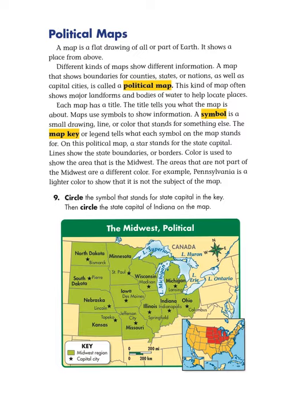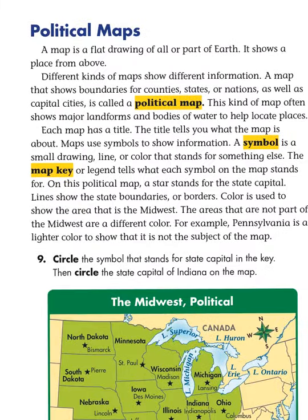Let me read this first section of text for you. It says, a map is a flat drawing of all or part of Earth. It shows a place from above. Different kinds of maps show different information. That's the key idea I want you to take away from this video — a map might show you a place, but it might be giving you different kinds of information.